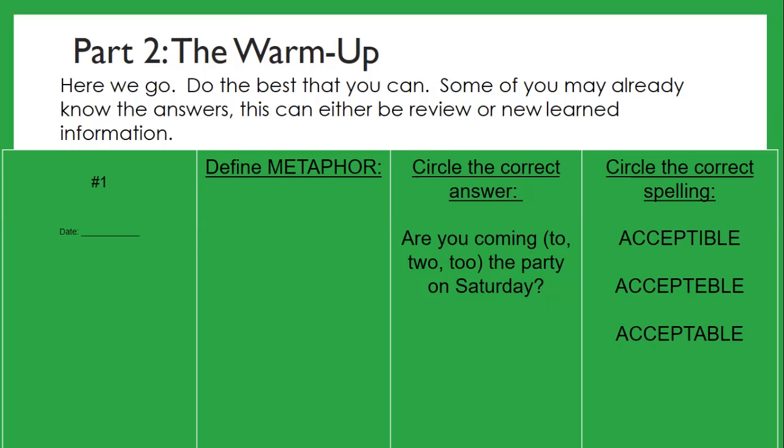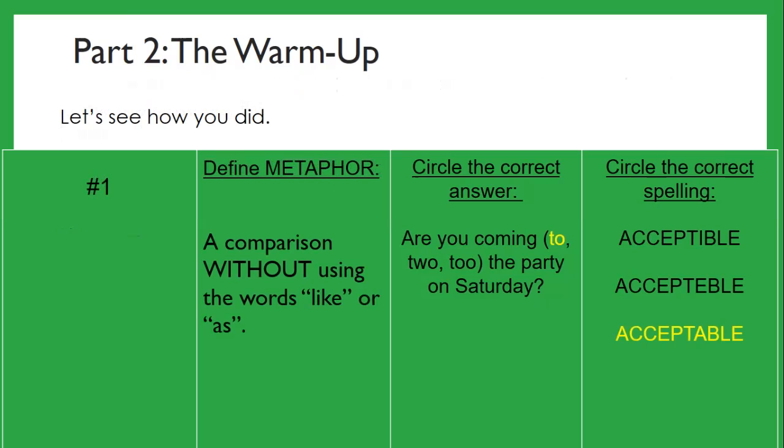Here we go. Let's see how you did. Define metaphor. A comparison without using the words like or as. I wanted you to write out the sentence, are you coming to, T-O, the party on Saturday? And I wanted you to write out the correct spelling of the word acceptable, which is A-C-C-E-P-T-A-B-L-E.